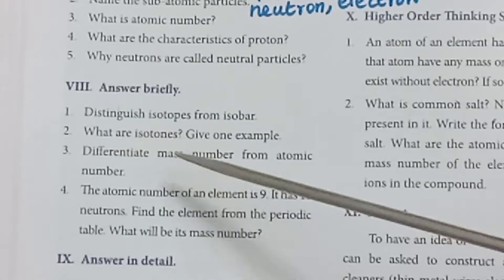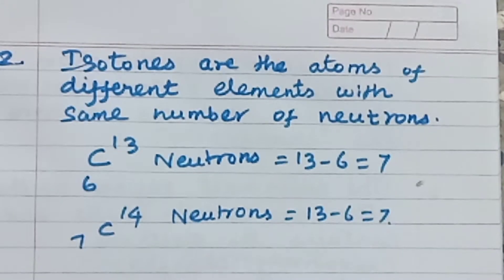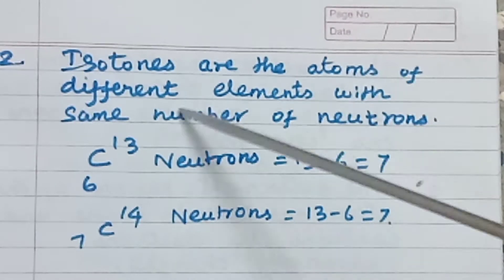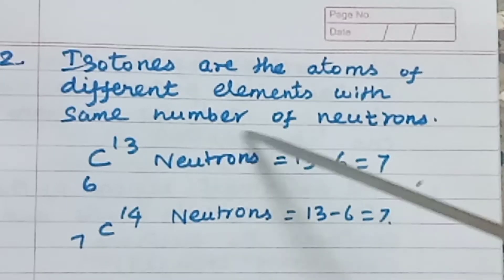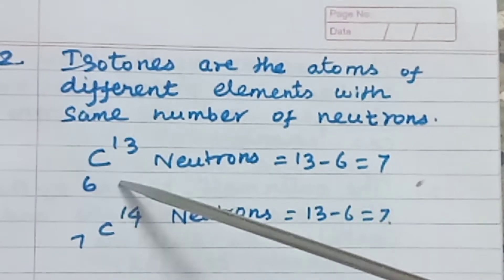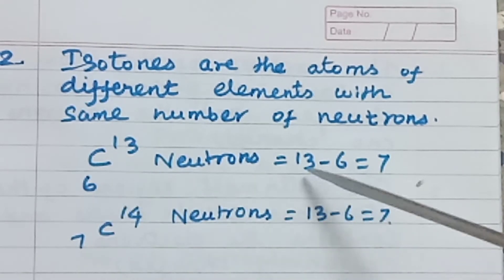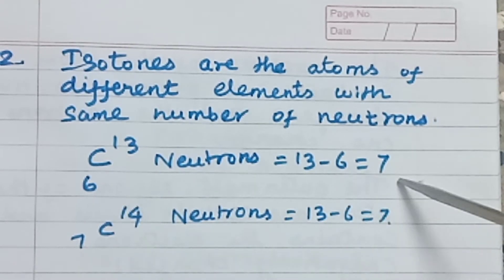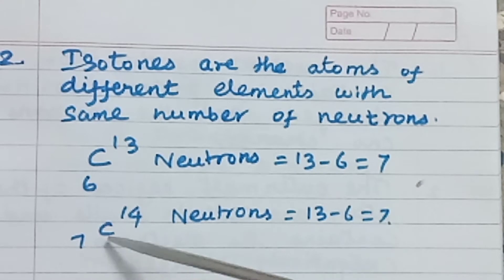What are isotones? Give one example. Isotones are the atoms of different elements with same number of neutrons. Carbon 6, 13 - neutrons equals 13 minus 6 equals 7.